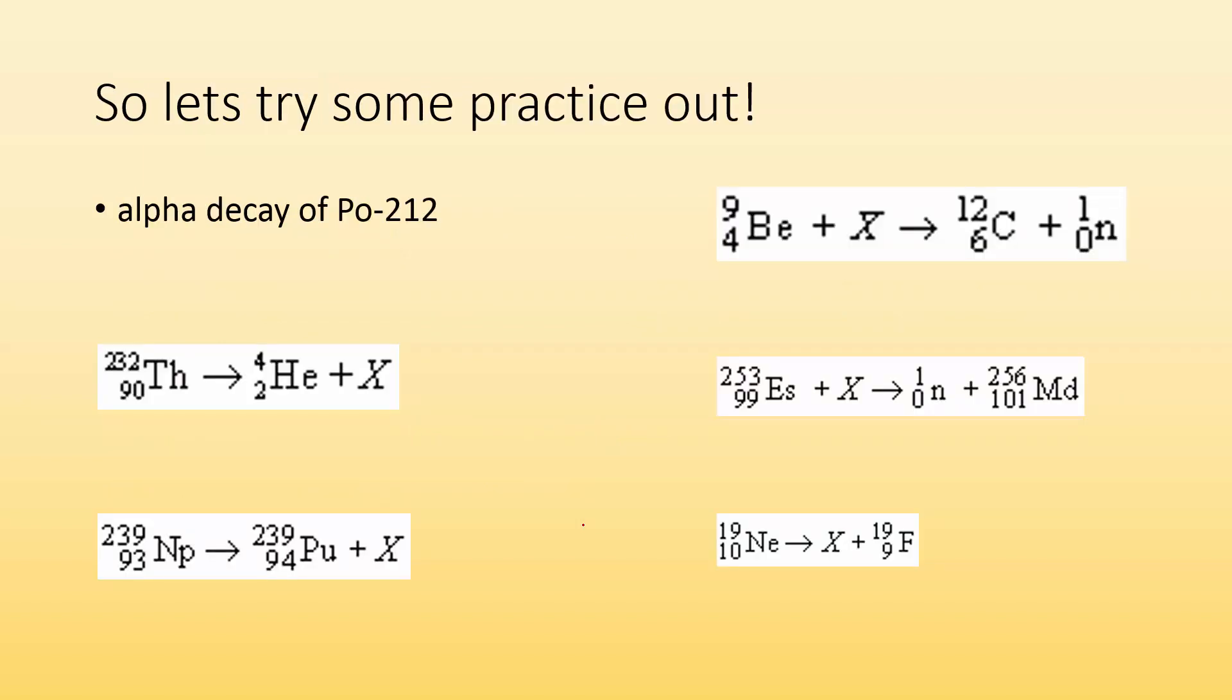So let's try some practice out. I encourage you, pause it, try it, and then check your answers. Alpha decay of polonium-212. First thing I got to do is figure out what polonium is. They tell me the mass is 212, but I got to look up what's its atomic number. I go to my periodic table, and it shows that polonium has an atomic number of 84. So alpha decay means it gives off an alpha particle.